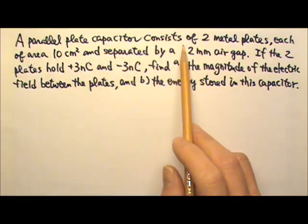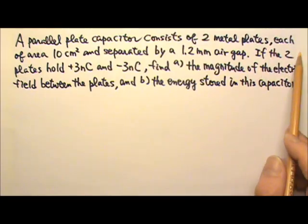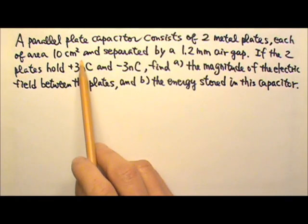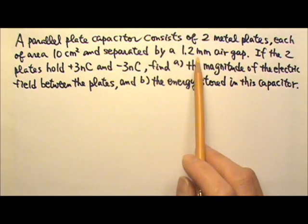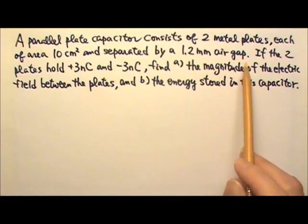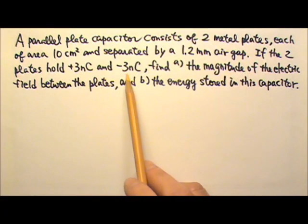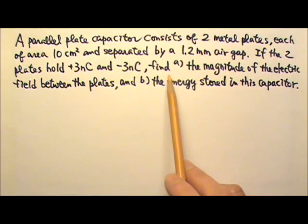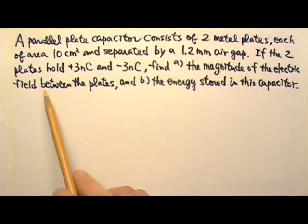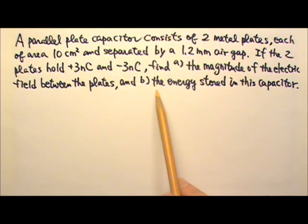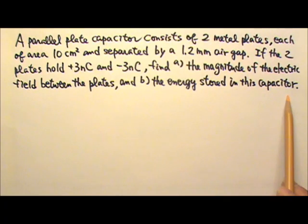A parallel plate capacitor consists of two metal plates, each of area 10 cm squared and separated by a 1.2 mm air gap. If the two plates hold positive 3 nC and negative 3 nC, find A, the magnitude of the electric field between the plates and B, the energy stored in this capacitor.